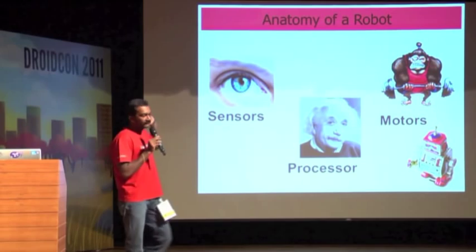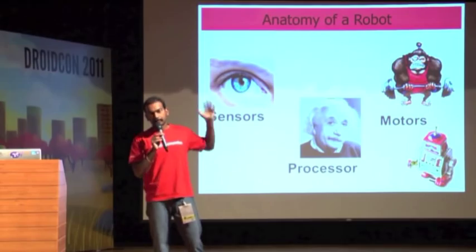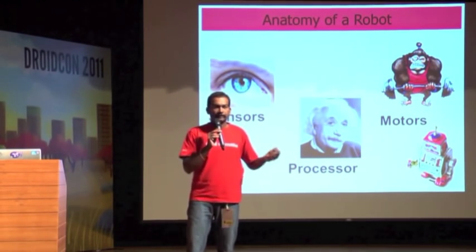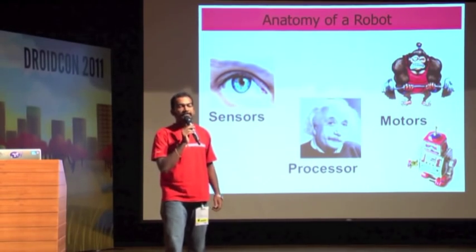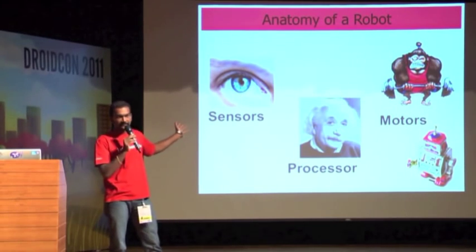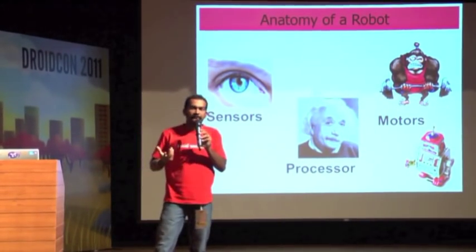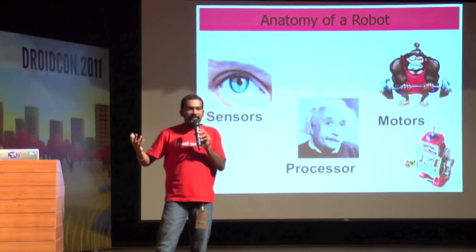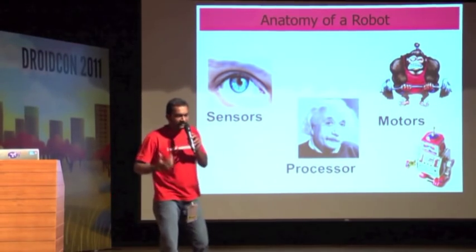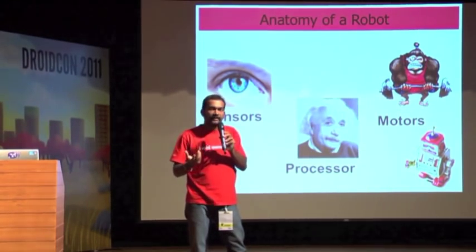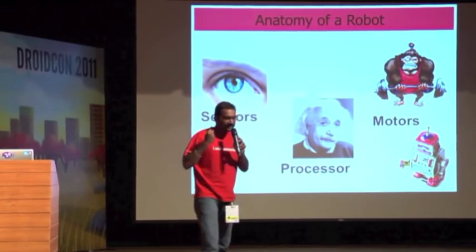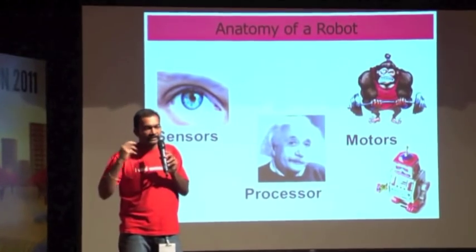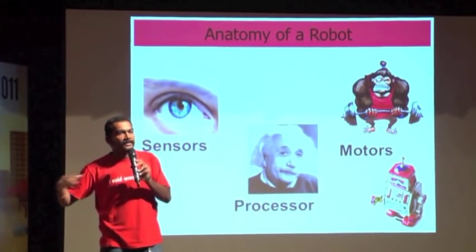If you take any robot — it could be something very complex, a simple line-following robot, or an electronic arm like those used in manufacturing plants — it basically has this analogy: you have a bunch of sensors, a processor, and motors. The processor is the brain. It's going to interact with the external world both by using the sensors and the motors. Sensors are like input to your computer program — you read state from the external world, apply some logic, process it, and then control the external world using the motors.